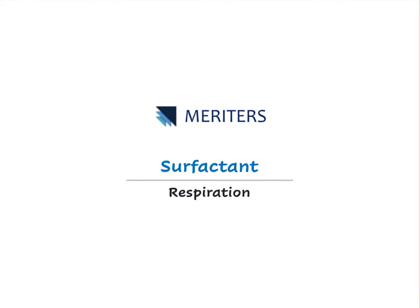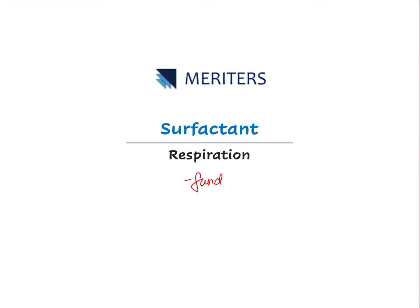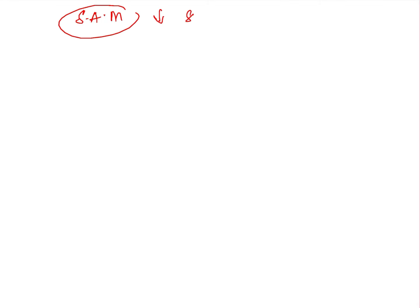In this video we'll be seeing about surfactant — how it is secreted, how it is spread across the alveolar surface, what are the functions of the surfactant, and what are the factors which affect it. Surfactant is the surface acting material, which reduces the surface tension. The surfactant which lines the epithelium of the alveoli in the lungs is called the pulmonary surfactant.